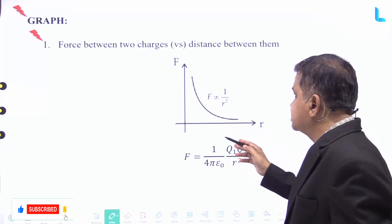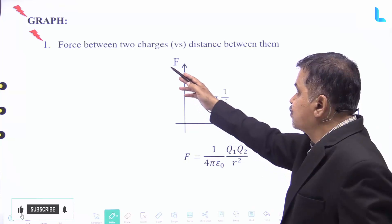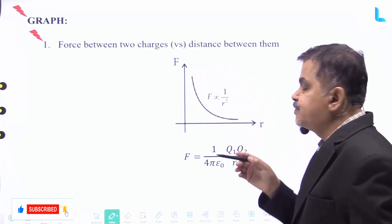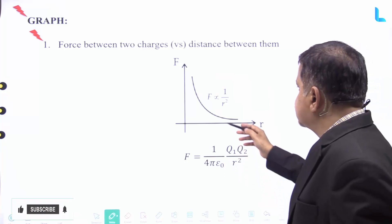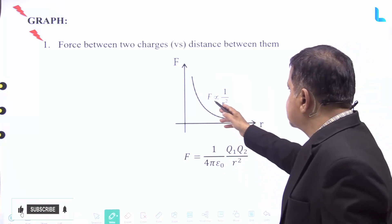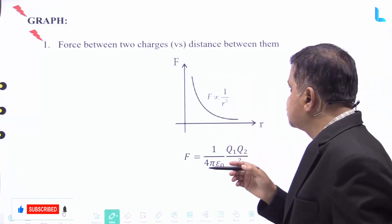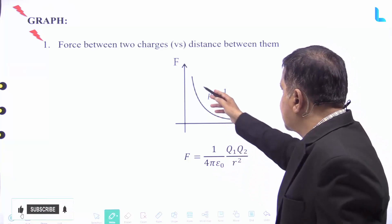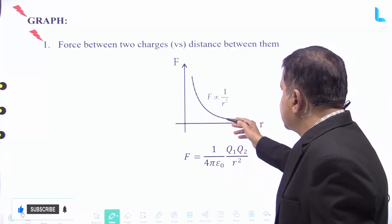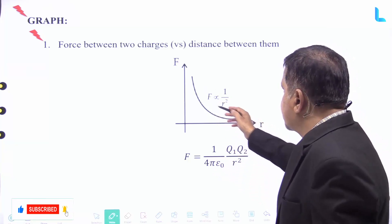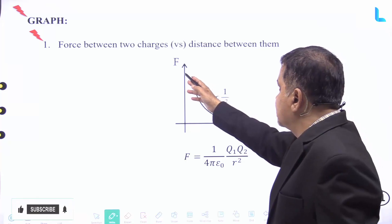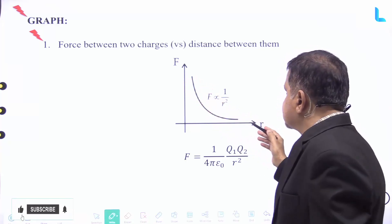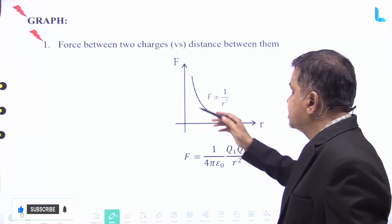A graph exists between F and r for Coulomb's Law — the force between two charges versus the distance between them. We can see that F is inversely proportional to r square. The graph represents this inverse-square relationship.